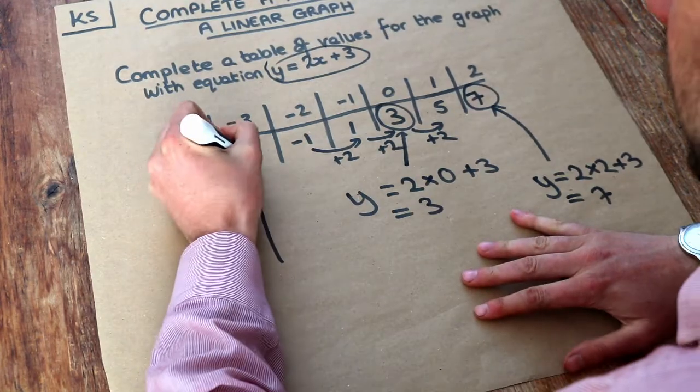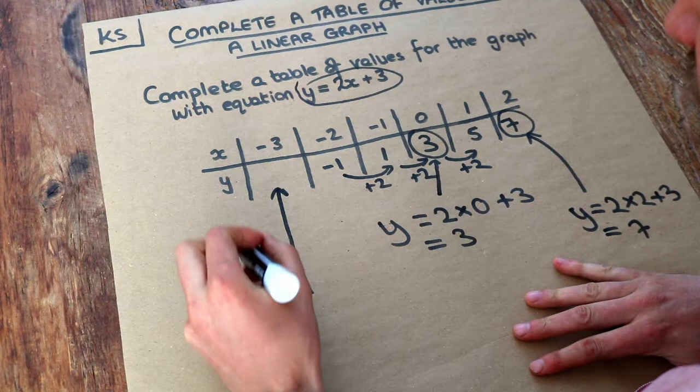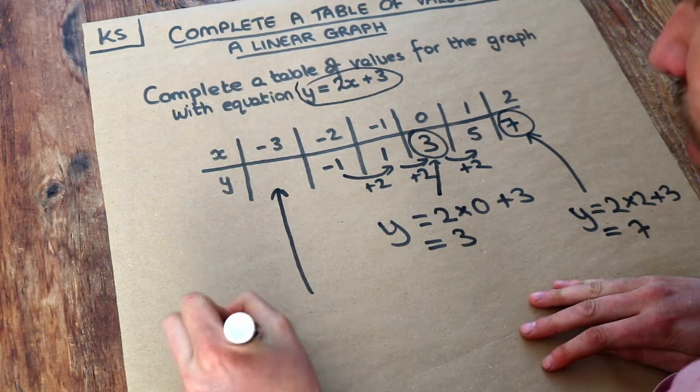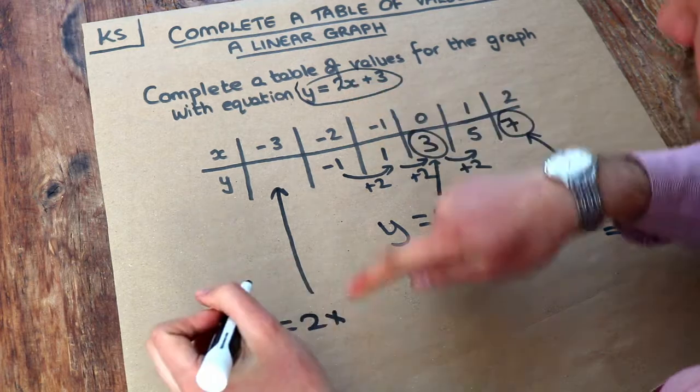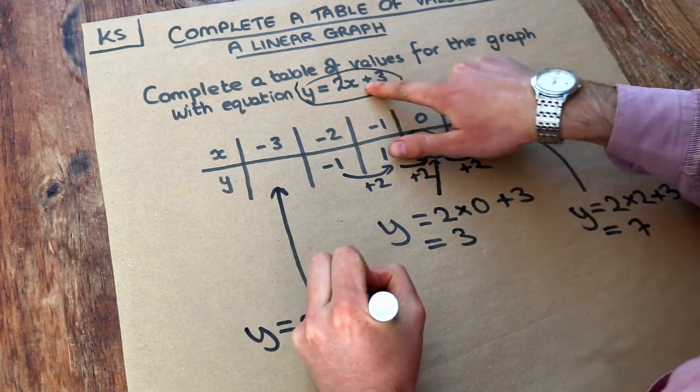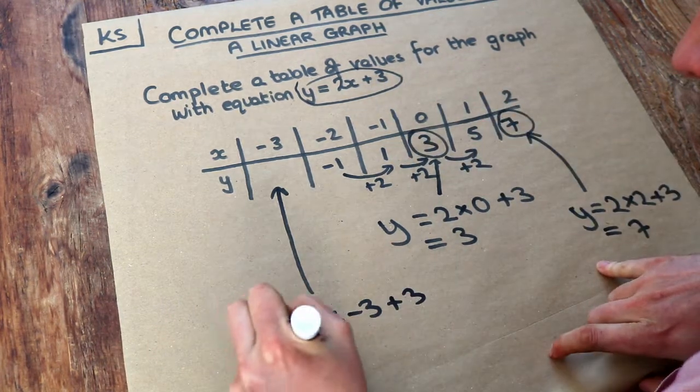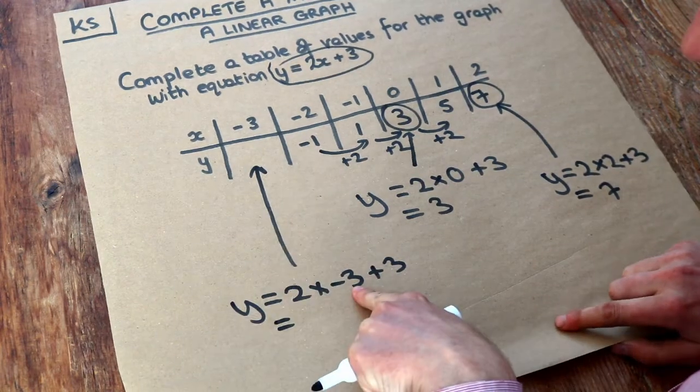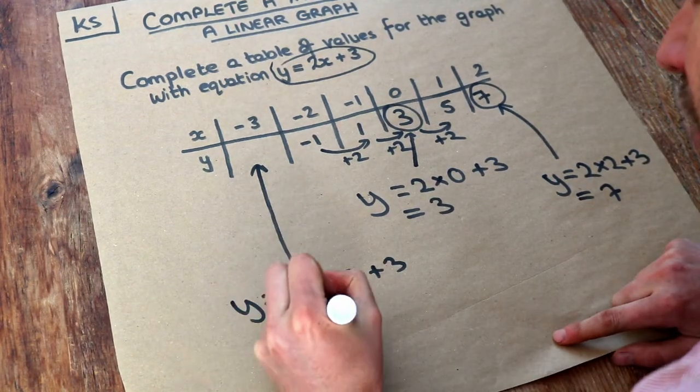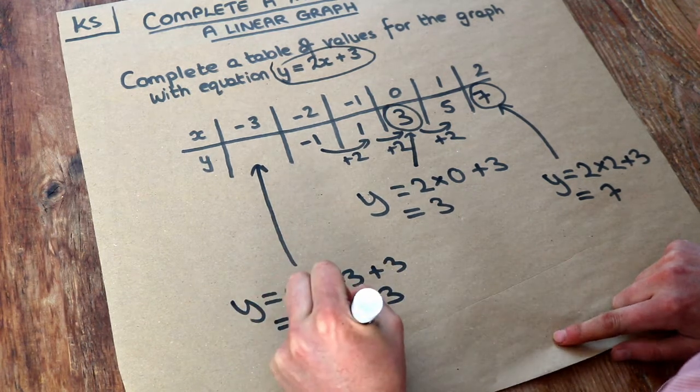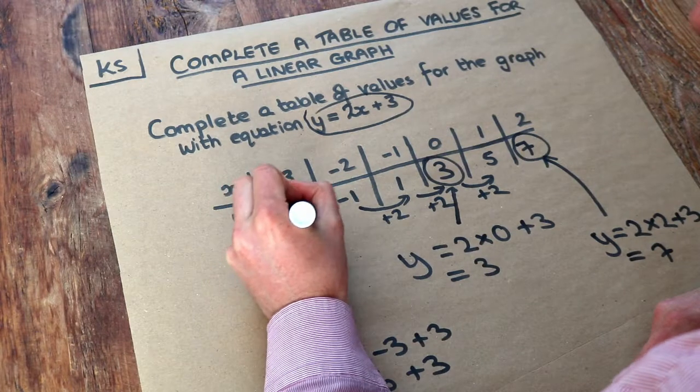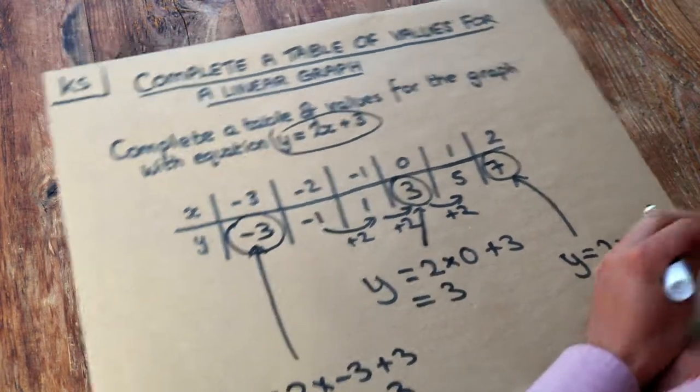But let's just work it out the same way as we did before. If the x value is -3, y is 2 times -3. 2x, 2 times -3, plus 3. Now 2 times -3, positive times negative, is negative. So it's -6 plus 3. What's -6 plus 3? It's -3. So indeed, we get the expected value, which is -3.